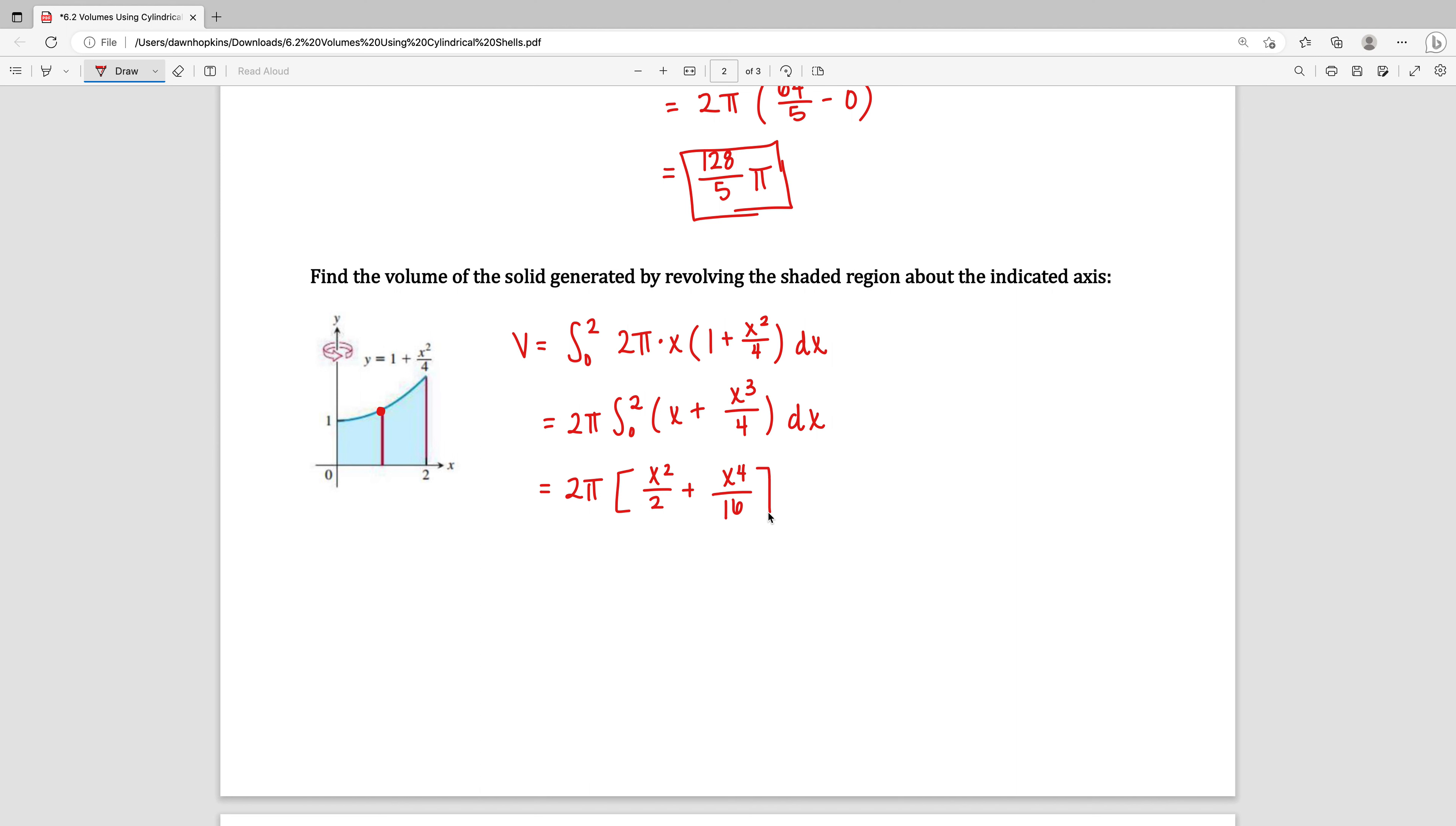We're going to look at that on the interval from 0 to 2. So I start by plugging in a 2 for X. 2 squared is 4, 4 divided by 2 is 2. 2 to the fourth is 16, 16 divided by itself is 1. Then I would subtract off what I would get from plugging in the 0 for X, and that's just going to be 0. So we have 2 pi times 2 plus 1. So 2 pi times 3 is 6 pi, and that's the volume here.